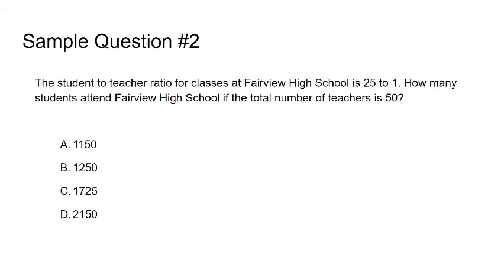The advantage is that there is a calculator tab you can click on, and this makes things so much quicker. What I did was use the calculator tab offered on the exam. You just multiply 25 times 50, and for that you get 1,250. Just using the calculator and tools is going to be your best resource. The answer is B — you're just multiplying 25 times 50.